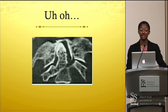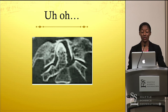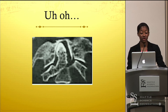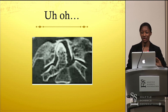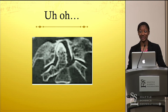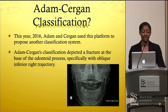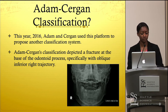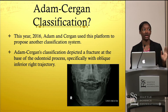Here's a novel case: a case report by Adam et al. reported a 91-year-old female who had cervical trauma secondary to a ground-level fall. The fracture line begins at the neck of the odontoid process and proceeds upwards at an oblique trajectory — a presentation that falls under no existing category. Adam and Sergan therefore created their own classification system, which specifically characterizes a fracture at the base of the odontoid process with an oblique inferior-right trajectory.